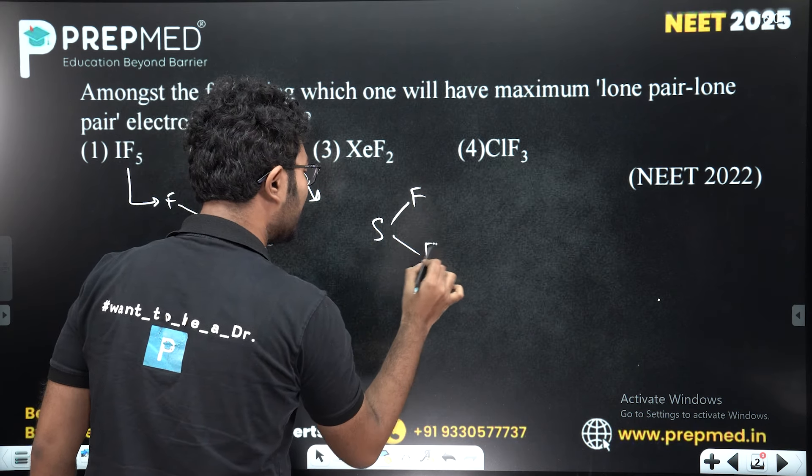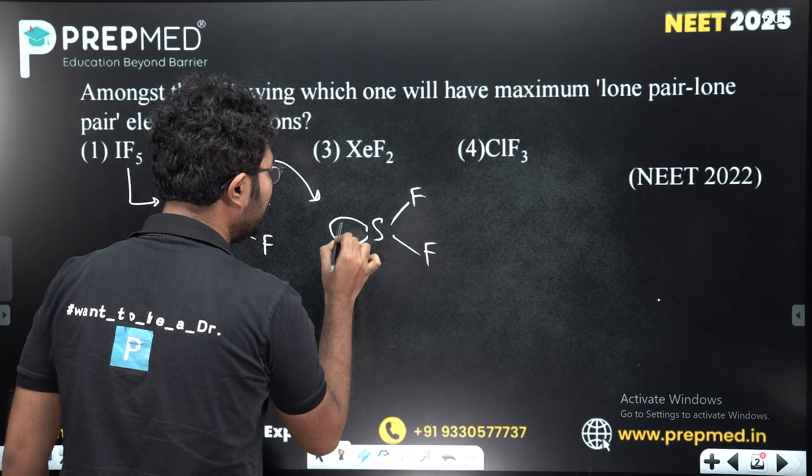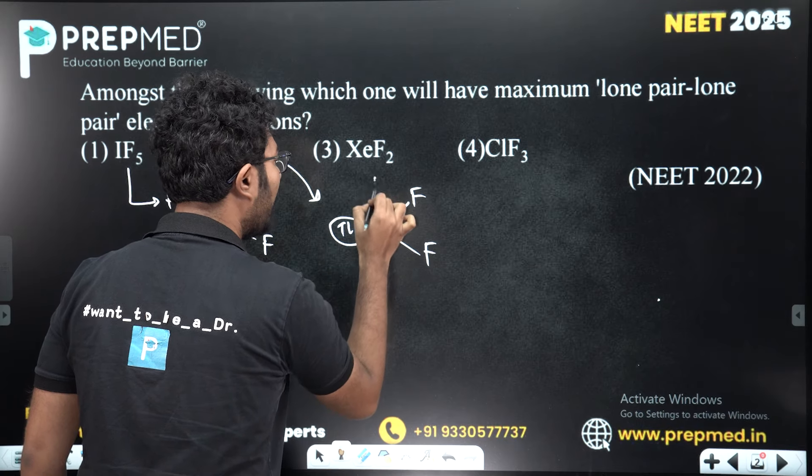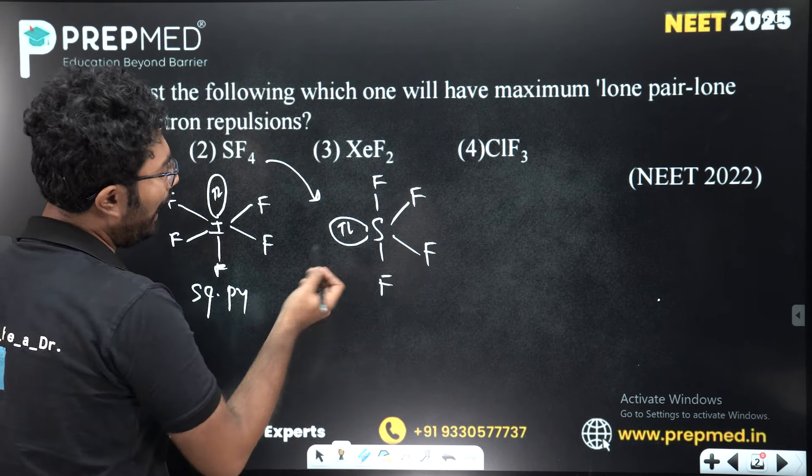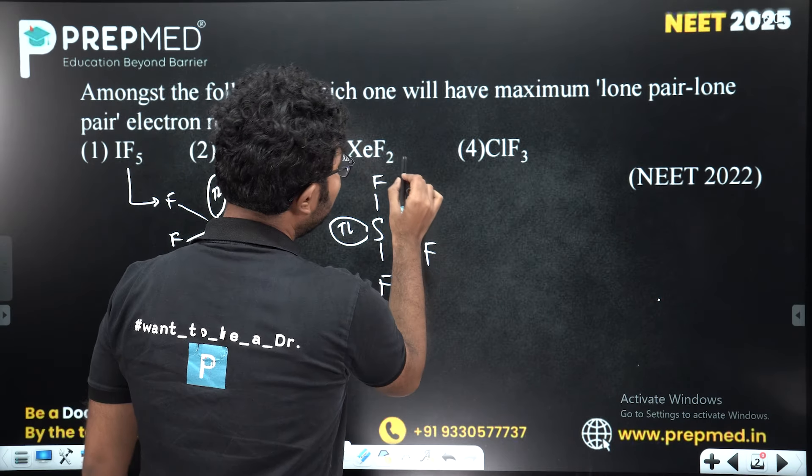SF4 has four fluorines. It has fluorines equatorially, one lone pair equatorially, and fluorines upper and lower. One lone pair in this structure.